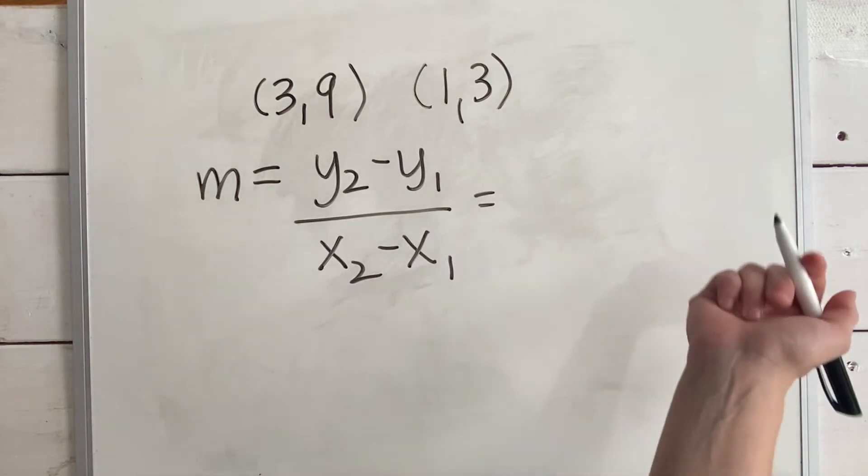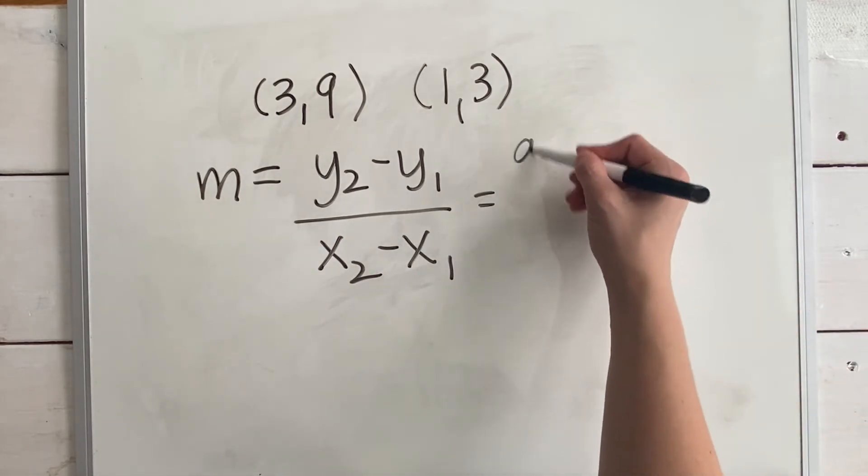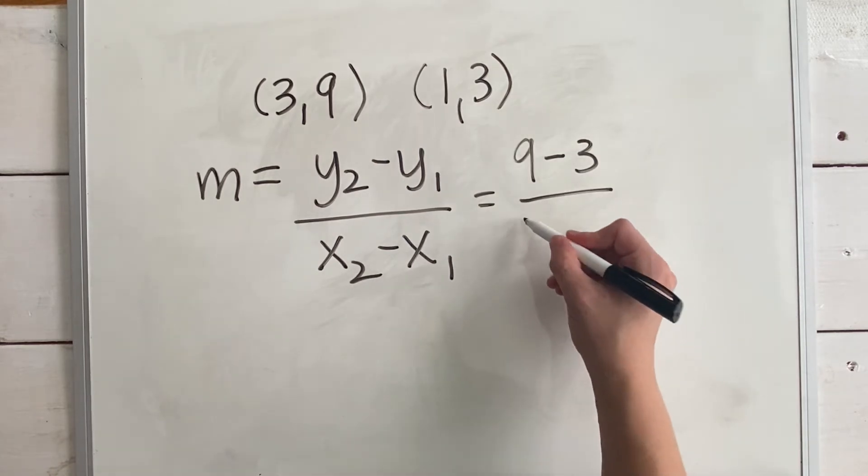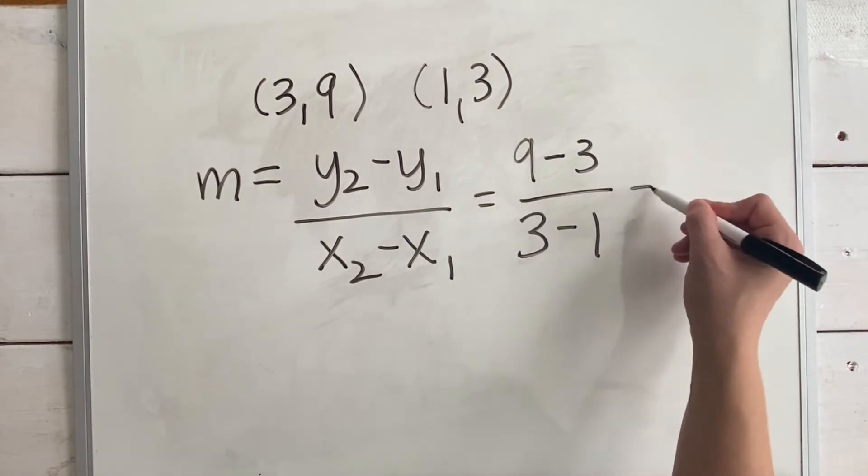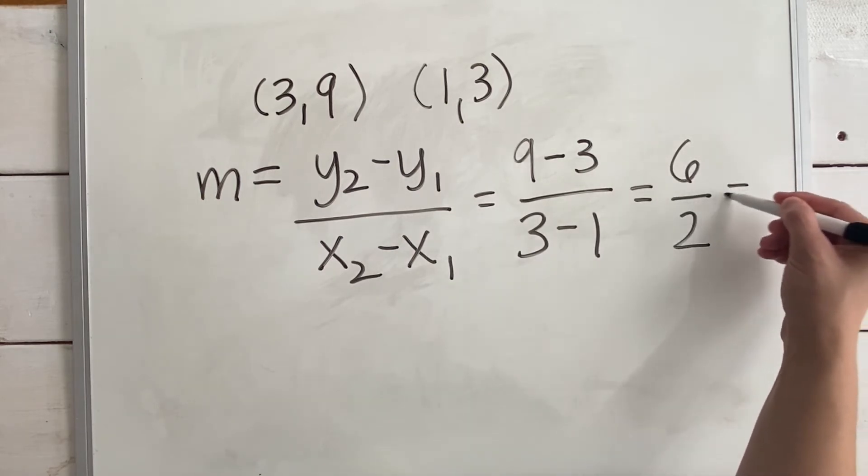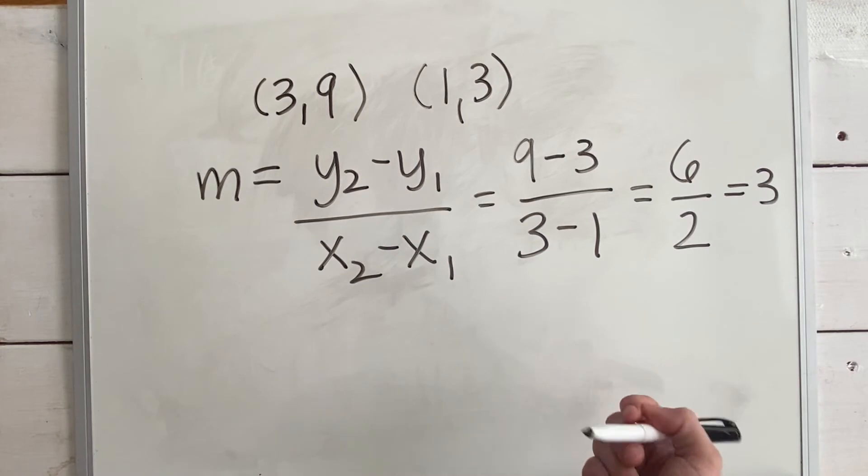Now we can plug in our numbers. So I'm going to put nine minus three over three minus one. So the slope of this line is three.